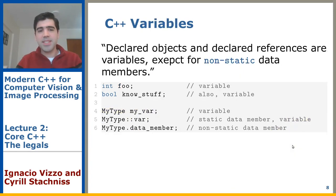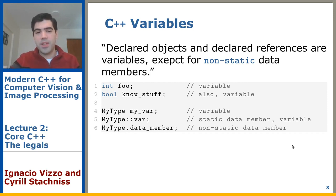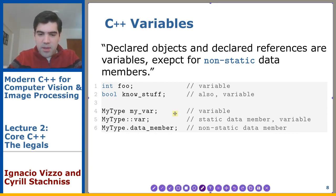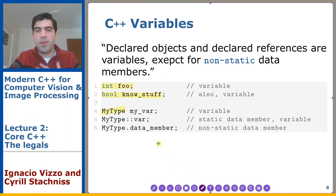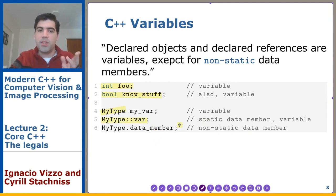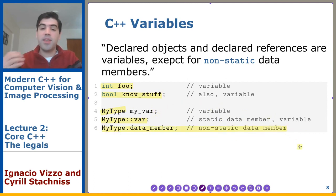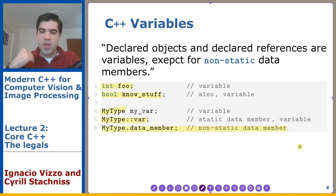C++ variables are basically all declared objects and declared references, except for non-static data members. For now you need to know that this is a variable, this is also a variable, and creating an instance of a custom-defined type is also a variable — also called an object instantiation of the class. If a class has a static data member, that's also a variable, but accessing a non-static data member is not specifically a C++ variable.